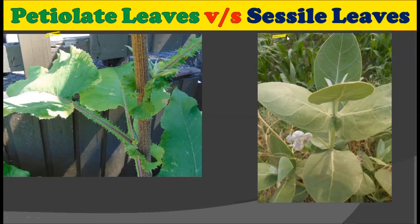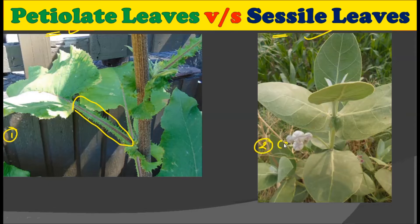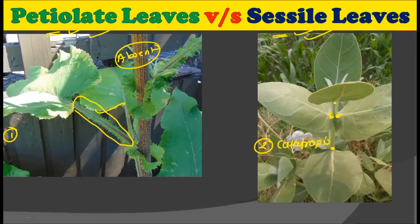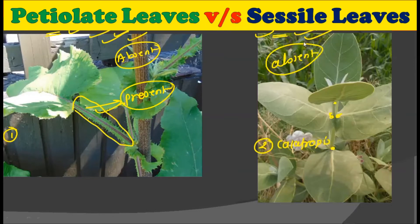There may be petiolate leaves or sessile leaves. If the petiole is present, as in picture number one, then such a leaf is called a petiolate leaf. If the petiole is absent in a leaf, then it is called a sessile leaf. As you can observe in the second picture of Chelidonium, there is no petiole at the leaf base, and due to lacking the petiole, these are called sessile leaves. Depending upon whether petiole is absent or present, there are two kinds of leaves: petiolate leaves and sessile leaves.